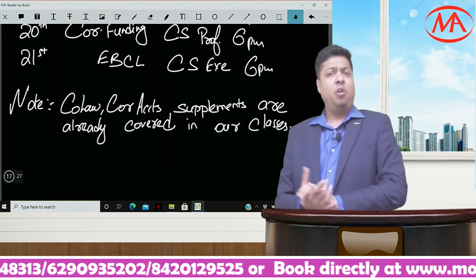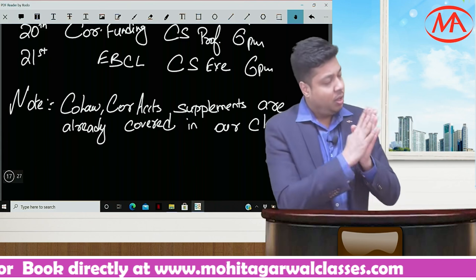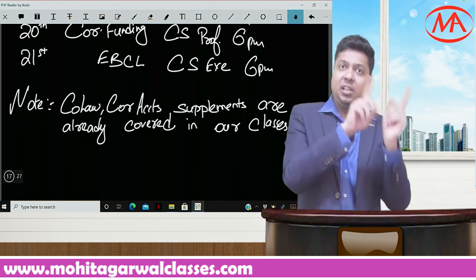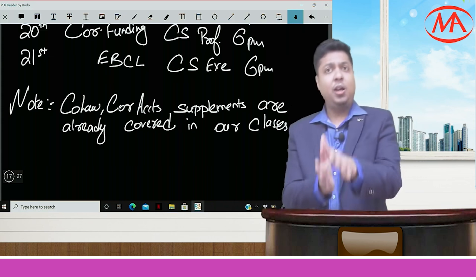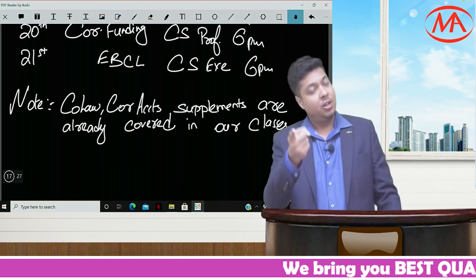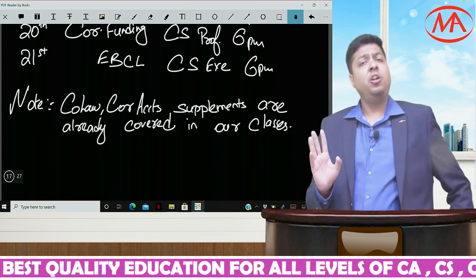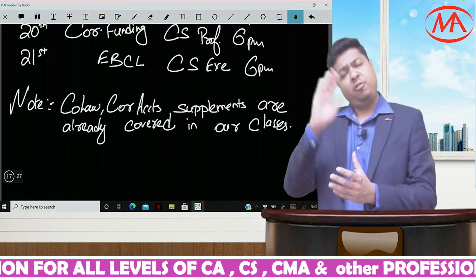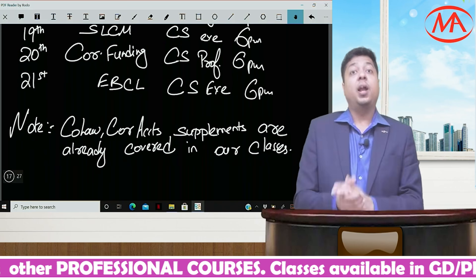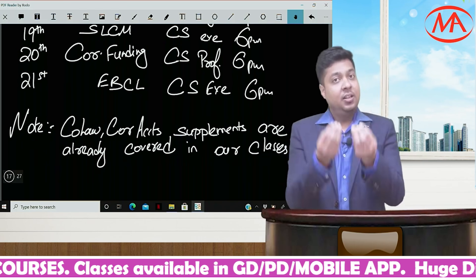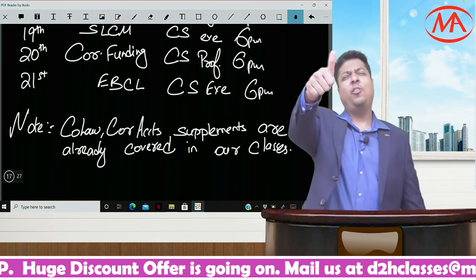For CS Executive, the institute has also issued a supplement for Company Law and Corporate Accounts, but those have already been covered in class. Company Law latest amendments and marathon revision videos — sections 1 to 148, 149 to 470, and Winding Up Rules — all with amendments incorporated have already been uploaded on YouTube. Note: Winding Up Rules are for Professional students, not Executive. For Corporate Accounts, the CS Executive supplement covers CARO 2016, which I had always emphasized must be studied, so the institute issued a supplement for it — and we have already covered it in class.